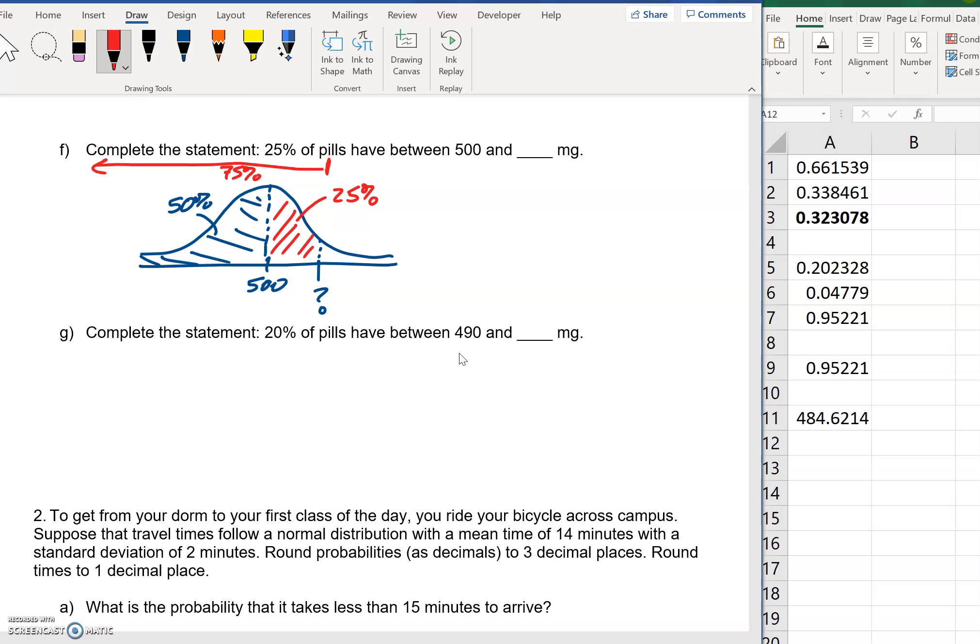So we can use our inverse norm. And I'll just copy and paste this and adjust as I need to. So the only thing I need to do is change that area. So instead of 0.1, I'm going to do 0.75. But otherwise, the mean and standard deviation are the same. So I get an answer of 508.09, et cetera. So I just say, in this case, sure, I'll just call it 508. That's fine.